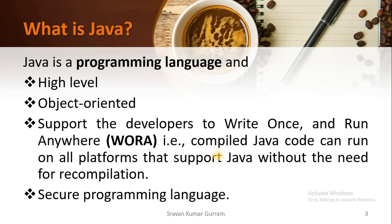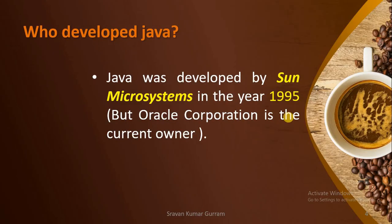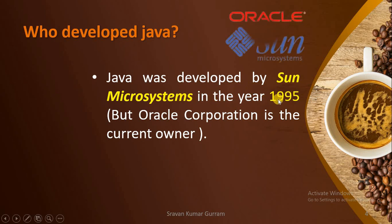Java is also a secured programming language. If you want to develop any web applications, you need to provide security because multiple devices can connect to your application. Java was developed by the company Sun Microsystems in the year 1995, but now Java is a product of Oracle Corporation.